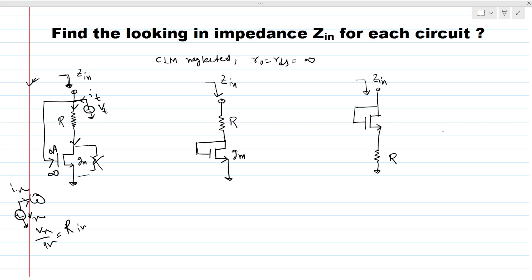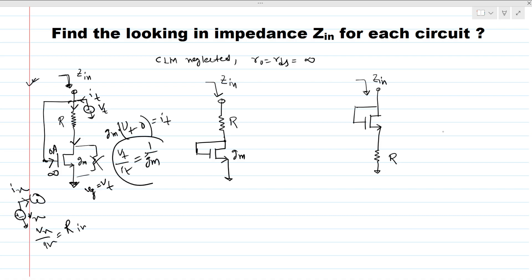We know that this small-signal Vg is nothing but the V-test voltage itself. So we can directly write: there is only one current source, which is gm times Vt minus zero, since the source terminal is grounded. This equals our It. So we can directly find that Vt over It is nothing but 1/gm. This is our answer — the looking-in impedance for this circuit is 1/gm.